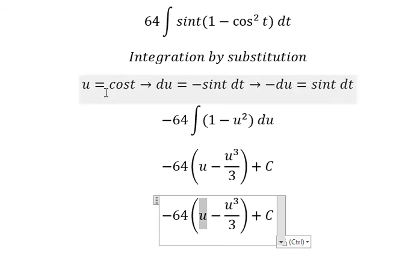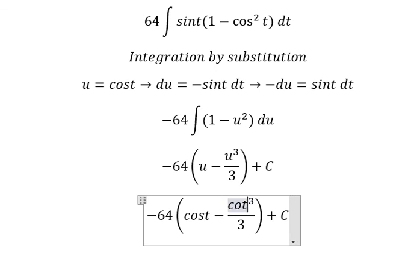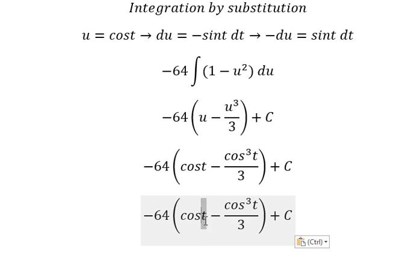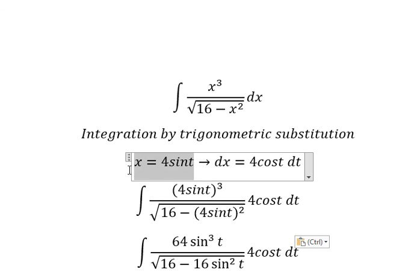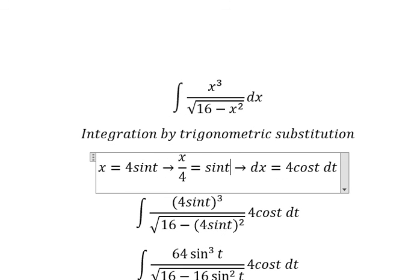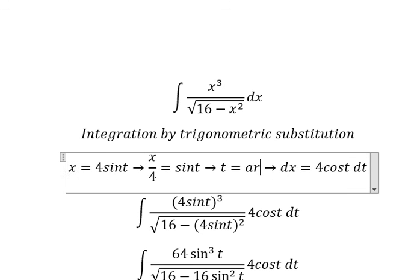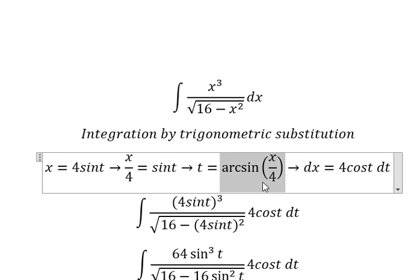For u, that is cosine t. For t, that is this one. So we divide both sides by 4 and now we have t equals arc sine of x over 4. So I will put this one to replace t.